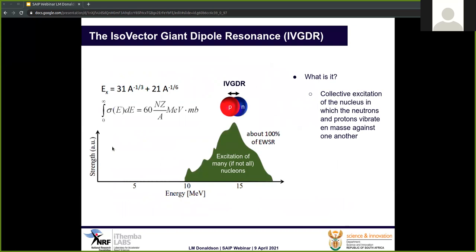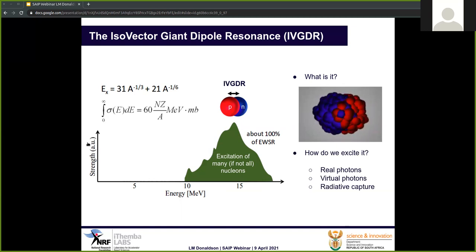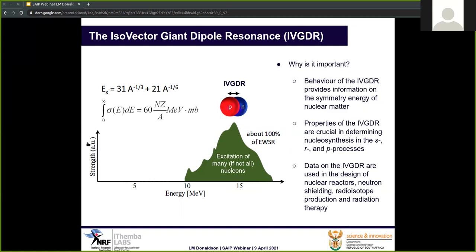Now that we have gone over some of the more general concepts, I'd like to focus our attention on the isovector giant dipole resonance. It is the collective excitation of the nucleus where the protons and the neutrons vibrate en masse against one another. It is excited by a variety of methods, including the use of real photons, virtual photons through relativistic Coulomb excitation, as well as radiative capture. The behavior of the isovector giant dipole resonance provides information on the symmetry energy of nuclear matter, which has applications for the nuclear equation of state in neutron stars.